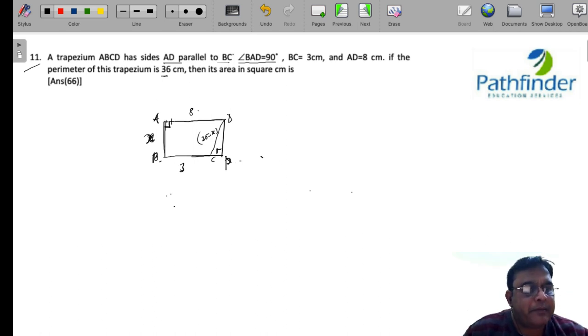So, AD, PB is a rectangle. This side, DP is X. And since this side is 3, CP must be 5.